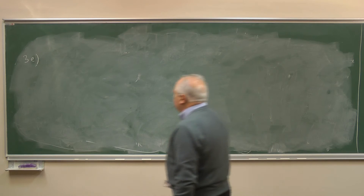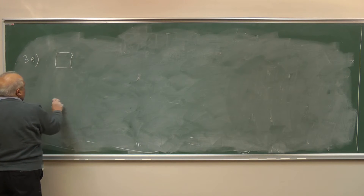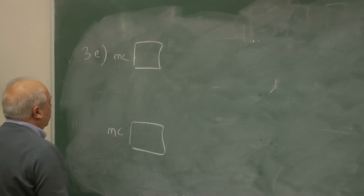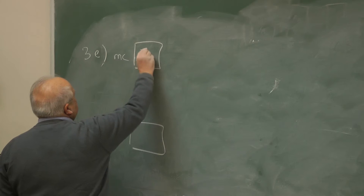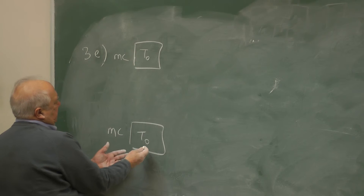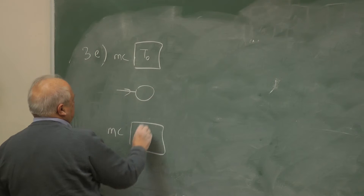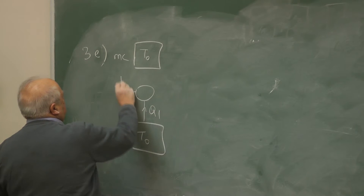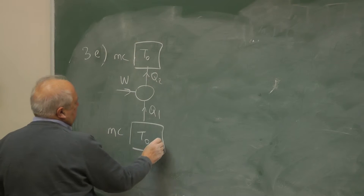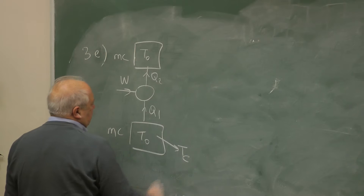The last one in this series: we take two blocks, identical blocks. They are initially at the same temperature, T0, T0. We take heat from this one by refrigeration, take Q1, we do work, and we dump Q2, such that this goes to Tc. Tc is known.